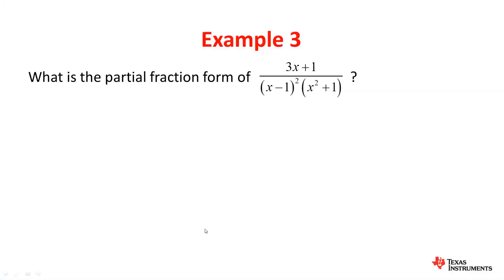Hence, if this was a multiple choice question, the option that would be correct has A over x plus 1, plus B over x minus 1 squared, plus Cx plus D over x squared plus 1 as its final form.